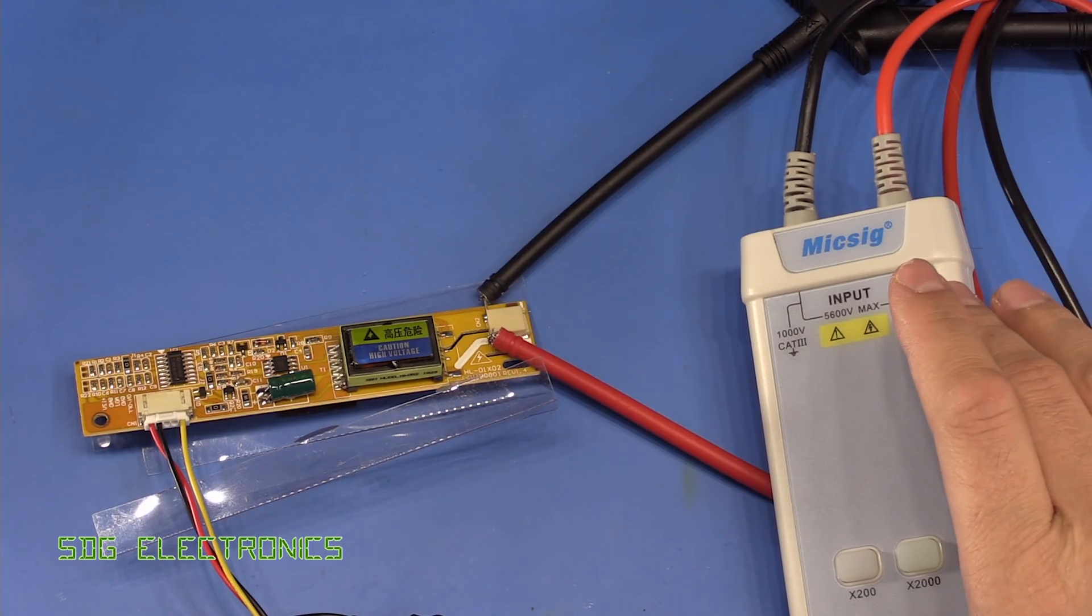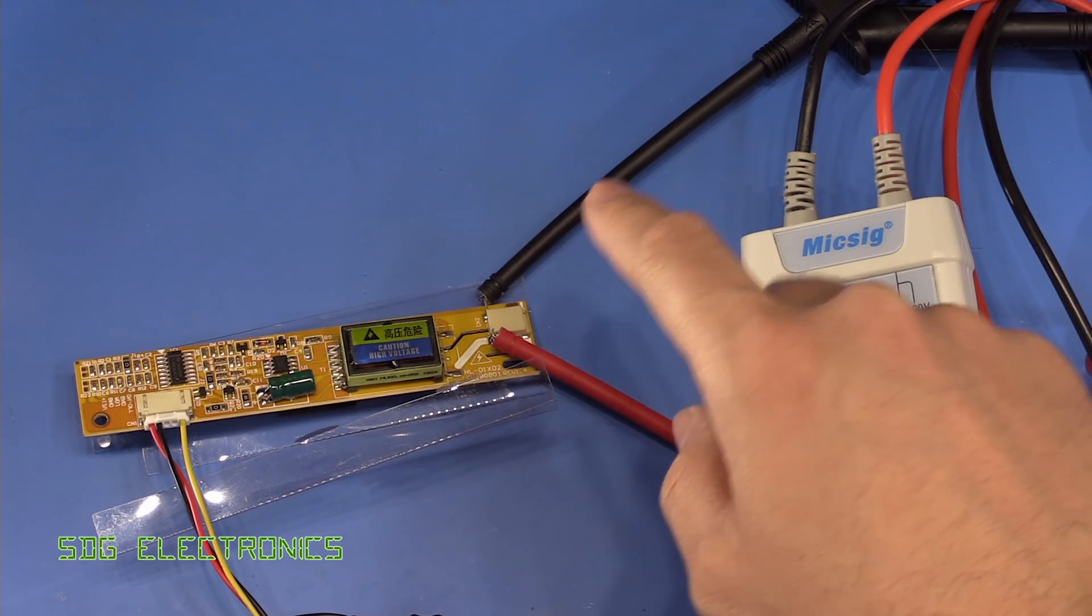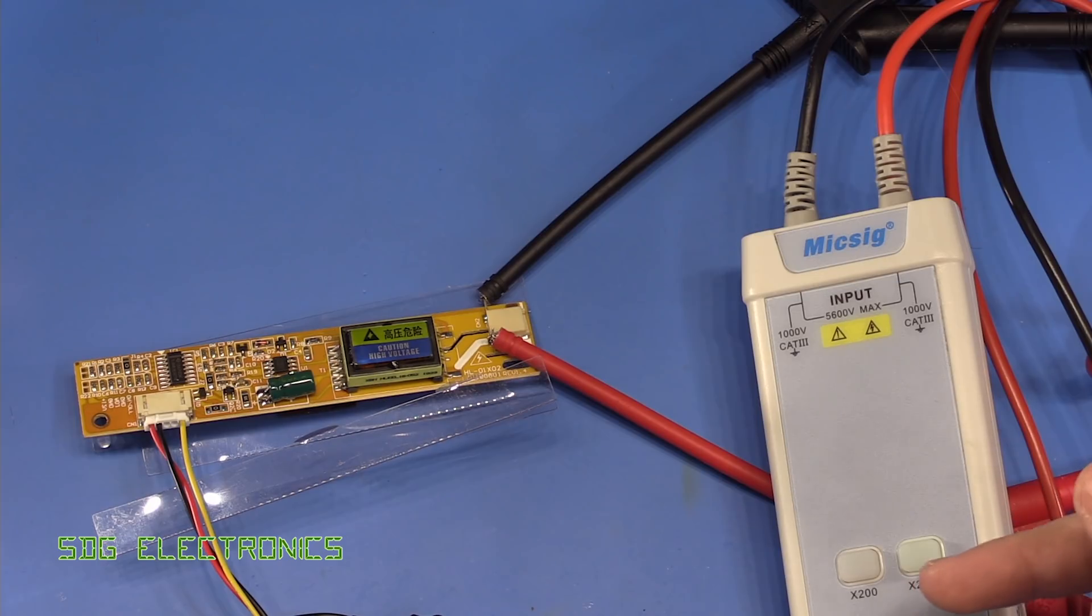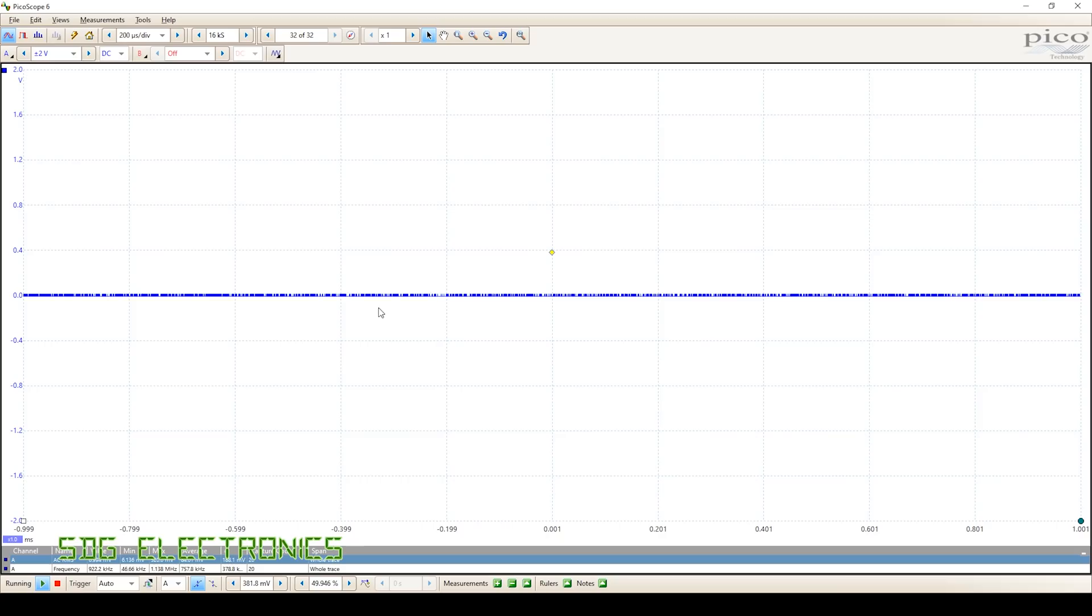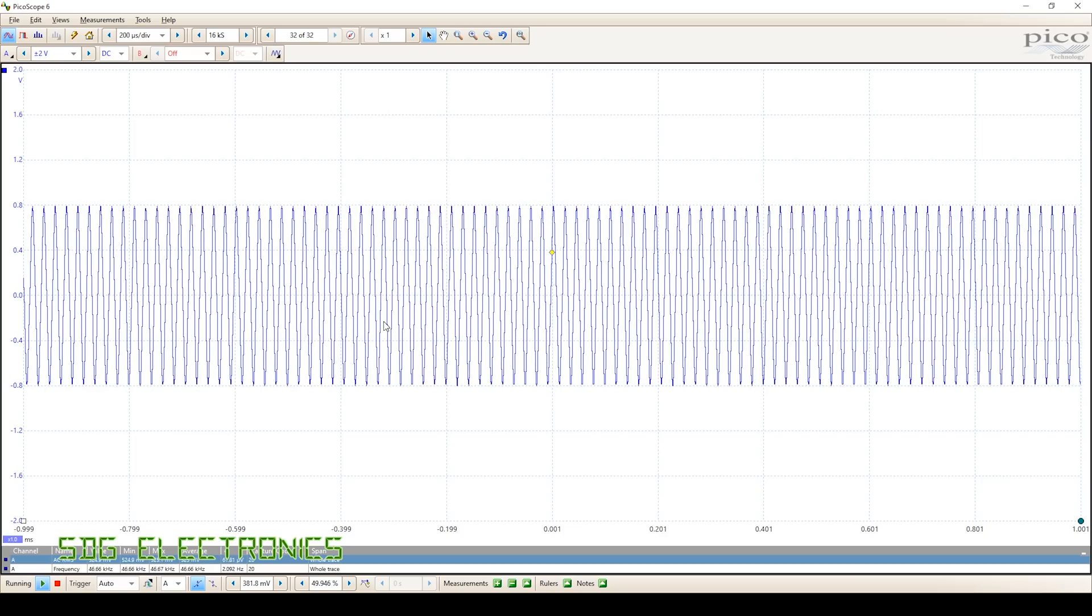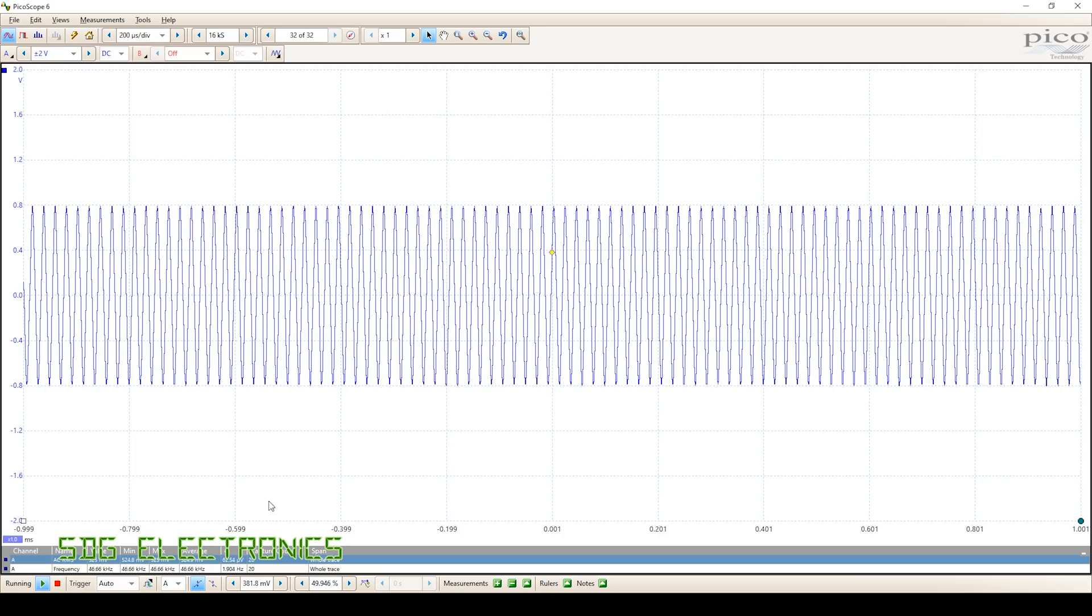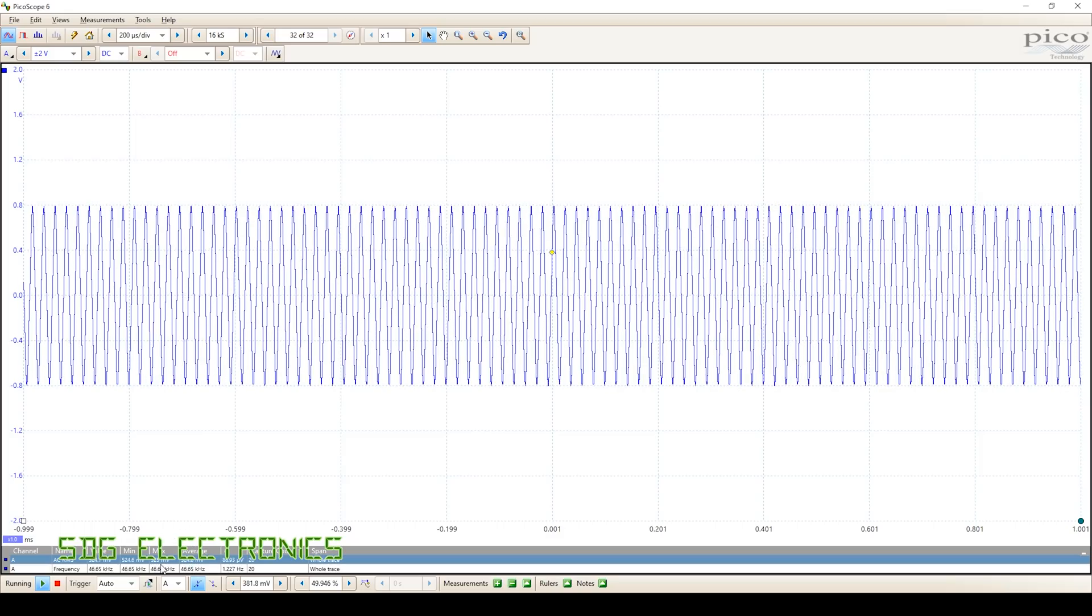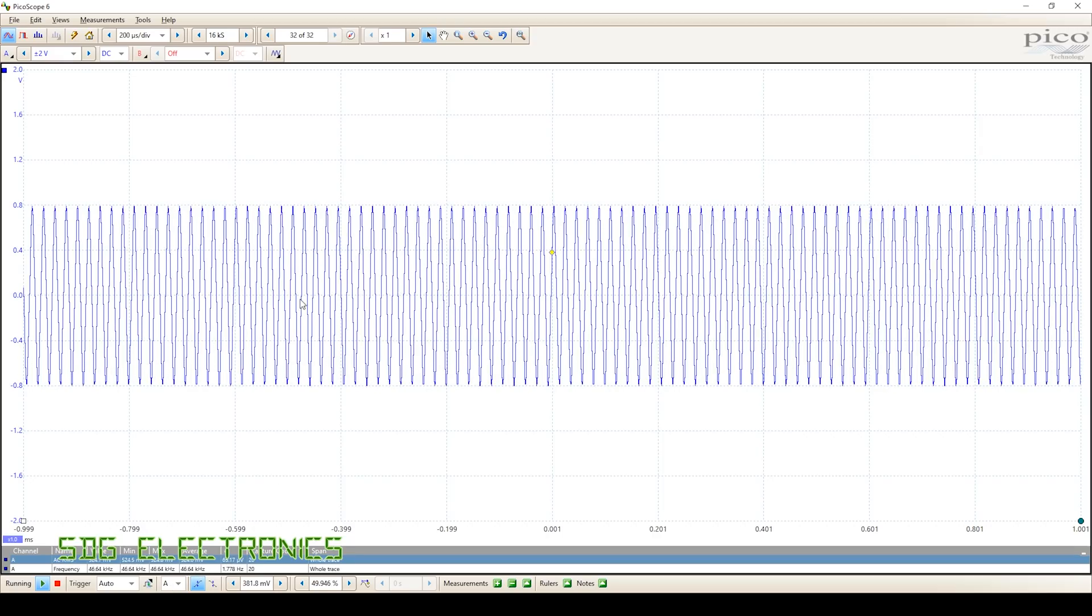We've got the differential probe hooked up to the inverter board. This is set to 2000 times gain. So let's have a little look at the scope output. If I turn on the supply to the inverter, here you can see we're getting a consistent output. So it looks like we don't need a minimum load on here which is good. You can see here that we're reading about 500 millivolts. So with the 2000 times probe that's about one kilovolt at 46 kilohertz. So that looks like it should be perfectly suitable for our job.